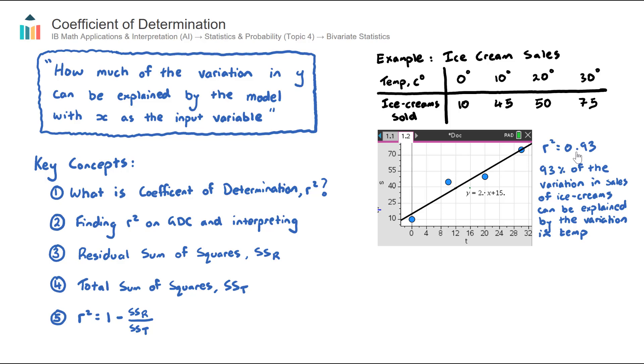This 0.93, what it means is 93% of the variation in the ice cream sold. See how it's varying? It's sometimes low. It's 10. Sometimes it's high. 93% of that variation can be explained by the variation in our input variable here, which is the temperature, which is a pretty high number.